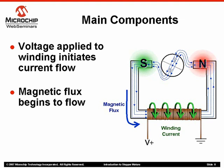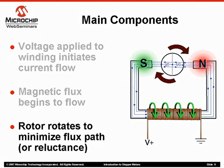The flux will want to travel the path of least resistance, or decrease the reluctance of the path. Since the rotor does rotate, it will position itself to minimize this reluctance.